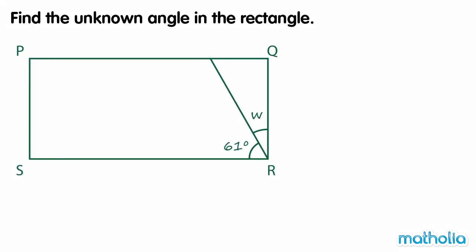Find the unknown angle in the rectangle. Since figure PQRS is a rectangle, we know that angle QRS is a right angle. So angle W is equal to 90 degrees minus 61 degrees, which is equal to 29 degrees. So the unknown angle, angle W, is 29 degrees.